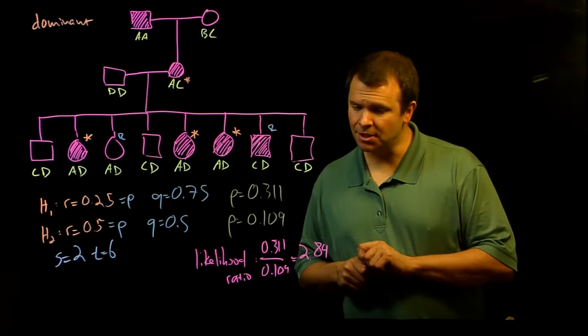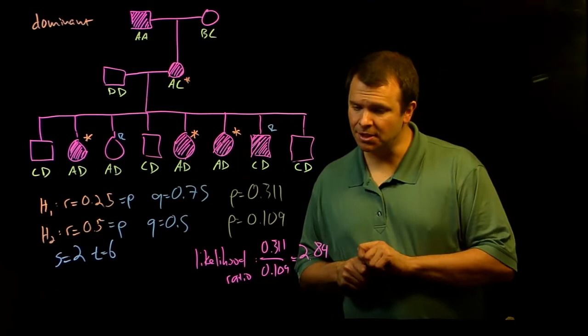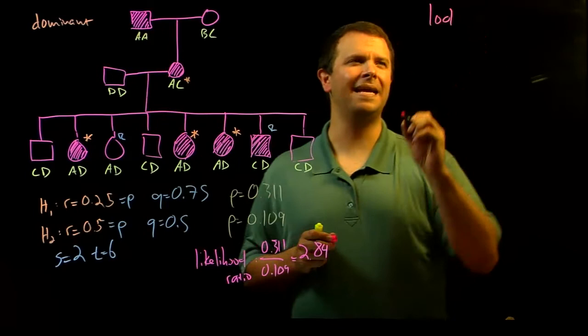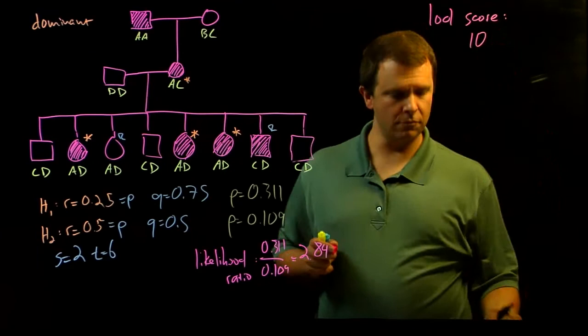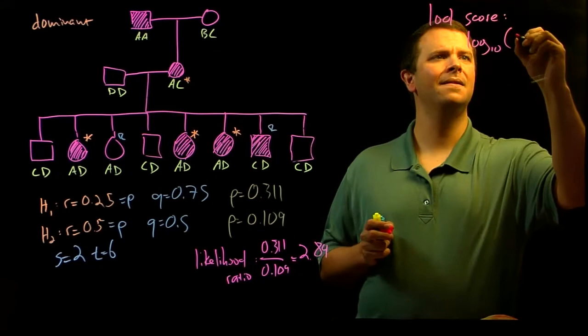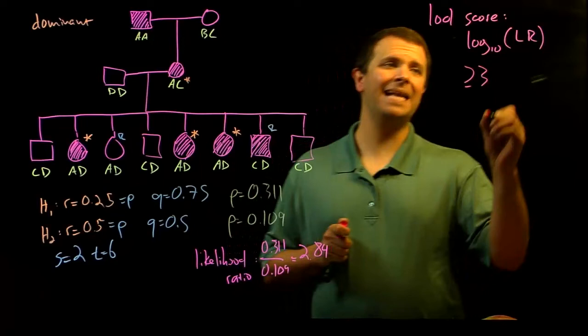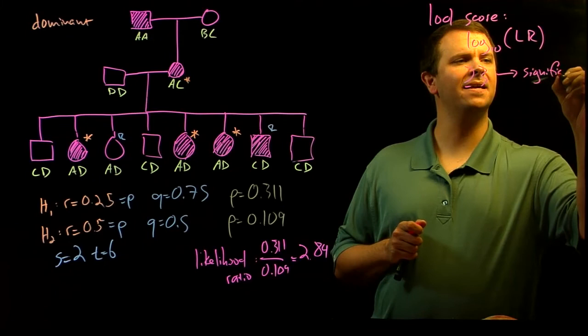And so those data are actually usually reported as a log base 10 of a likelihood ratio or an LOD or a LOD score. This is the log base 10 of the likelihood ratio. And if you get a LOD score of greater than or equal to three, that is generally understood to represent a significant linkage between a polymorphism and a disease gene.